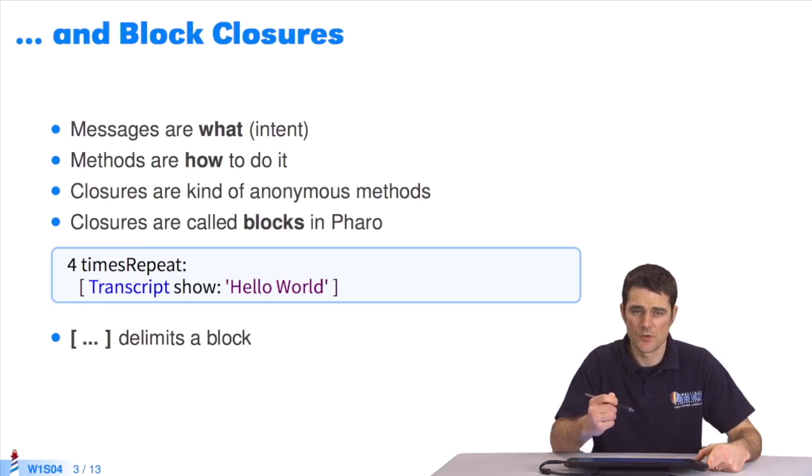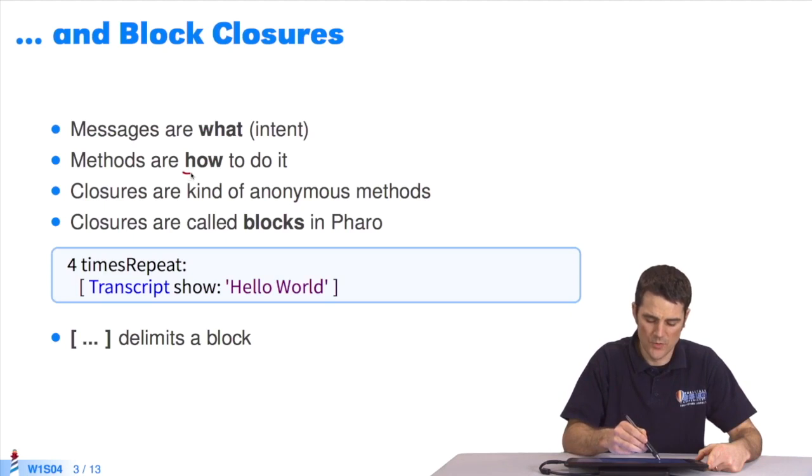The messages indicate the programmer's intention. When I send a message to an object, I'm asking it to do something. It's really a request made to the object. And the object decides what method to use. This is the how—how to achieve the programmer's intention by deciding what method to employ.